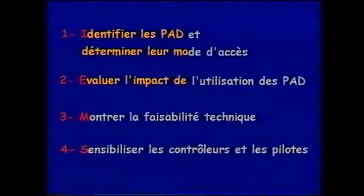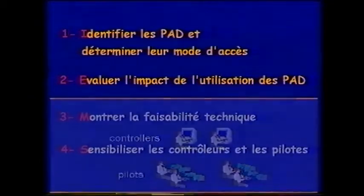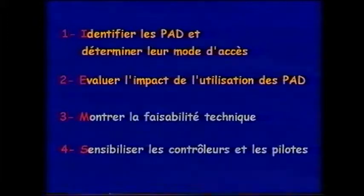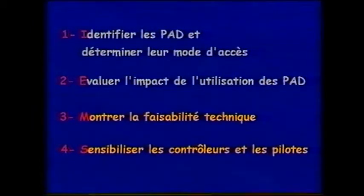Les deux premiers objectifs mettent en œuvre un volet simulation permettant de jouer divers scénarios de trafic. Les deux derniers objectifs passent par l'équipement d'avions évoluant dans l'espace de Paris-Orly, constituant le volet trafic réel de l'expérimentation.